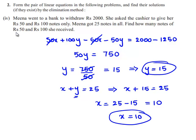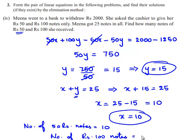X is nothing but the number of rupees 50 notes. So number of 50 rupees notes is equal to 10, and the number of 100 rupees notes is equal to Y, which is nothing but 15.